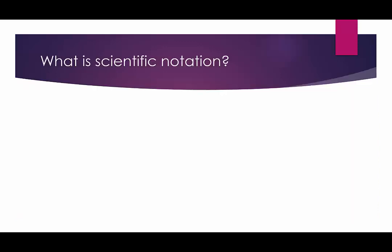Just a quick review of what scientific notation is. When numbers are written in scientific notation, they're of the form A times 10 to the B, where A is a number between 1 and 10 — so 1 is less than or equal to A, which is less than 10 — and B is an integer. If B is negative, we're dealing with a number smaller than 1, and if B is positive, we're dealing with a number bigger than 1.